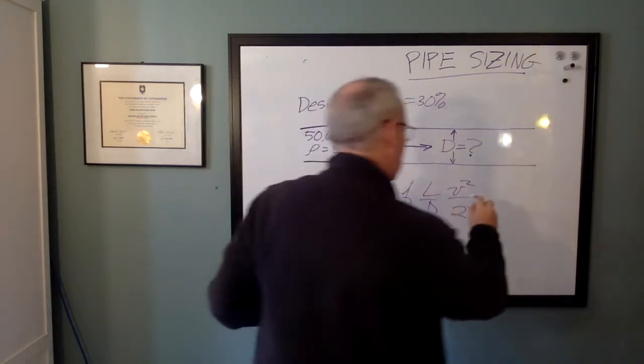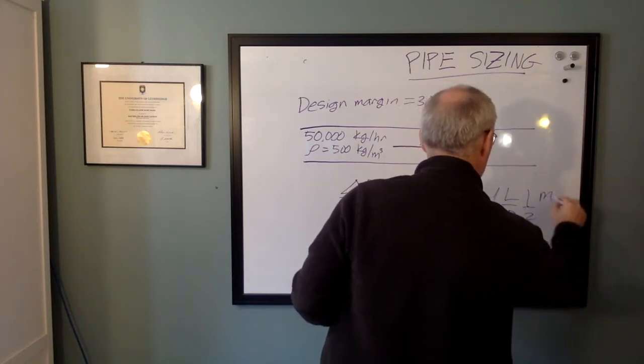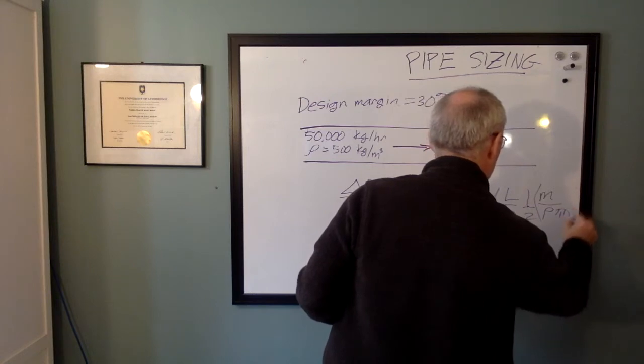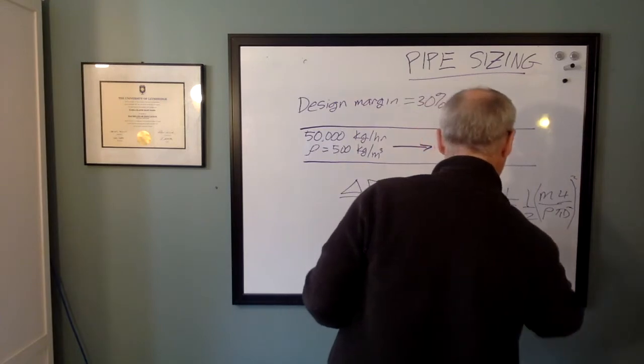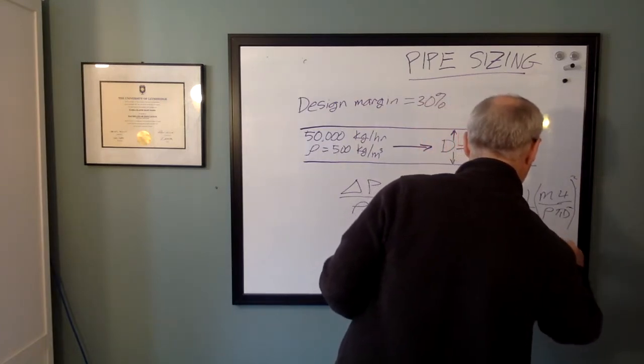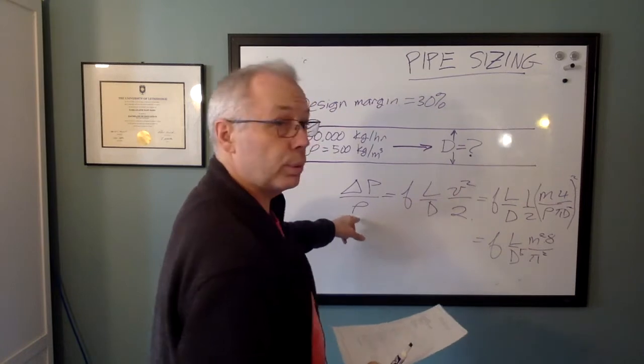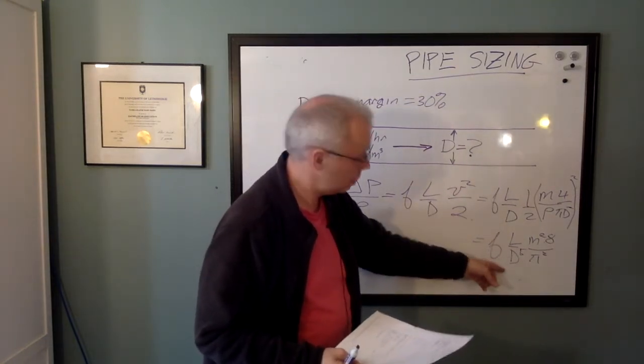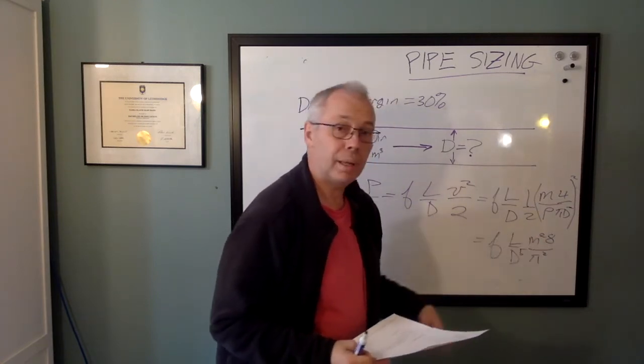f L over d, one half. Mass flow, density, pi d squared, put a 4 up here, square the whole thing. And we get delta P over rho is equal to f L over d to the fifth, mass flow squared divided by pi squared multiplied by 8.